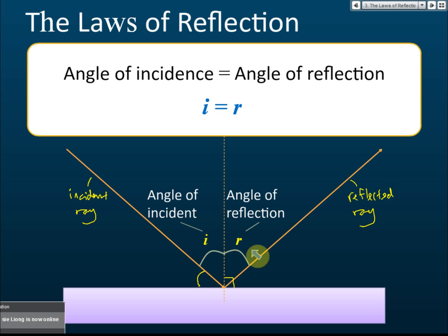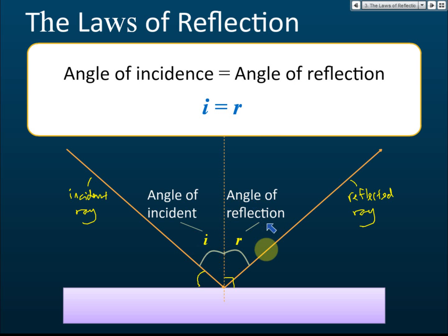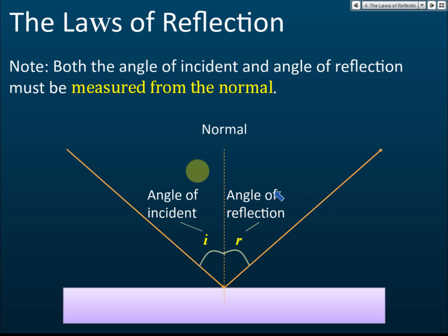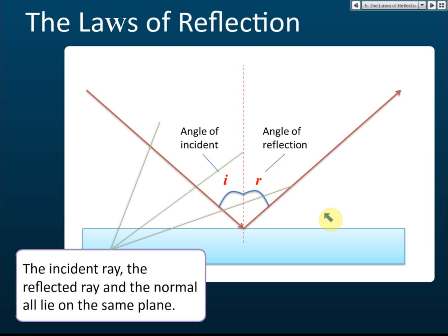According to the laws of reflection, the angle of incidence must be equal to the angle of reflection. There are two laws of reflection. This is the first law: the angle of incidence must be equal to the angle of reflection. Both angles must be measured from the normal.